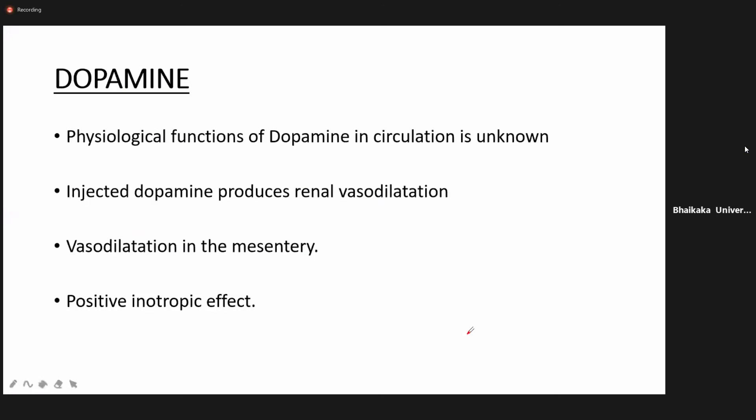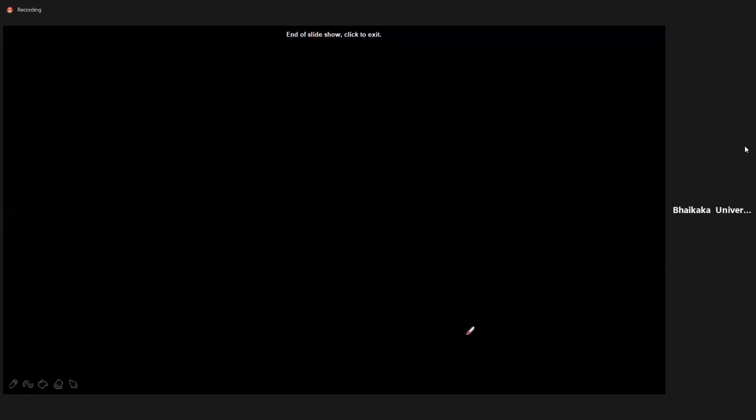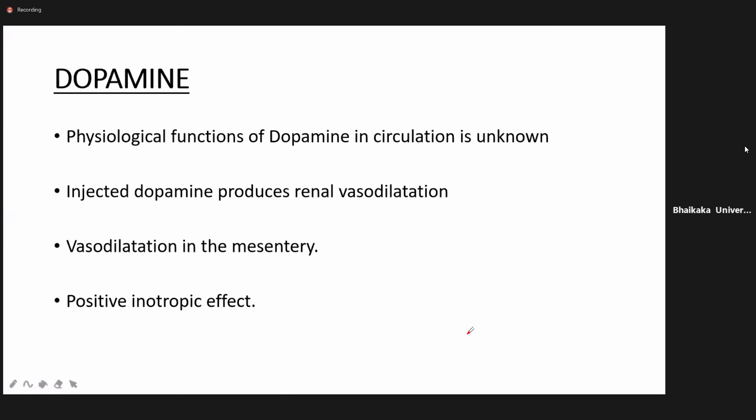Dopamine secreted from the adrenal medulla into circulation has unknown physiological functions. However, injected dopamine produces renal vasodilation and vasodilation in the mesentery (intestine), and has a positive inotropic effect on the heart, increasing force of contraction. Dopamine drip is therefore used in cardiogenic shock to increase cardiac contractility. This concludes today's lecture on adrenal medulla hormones.